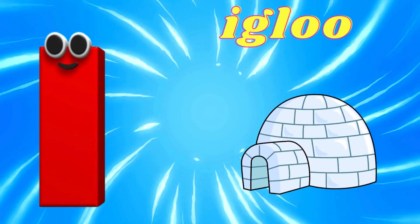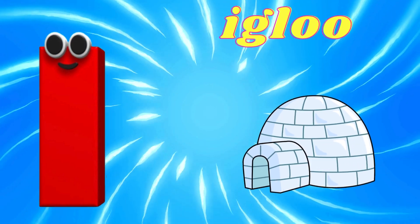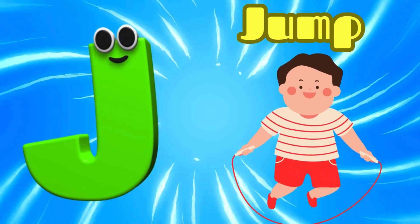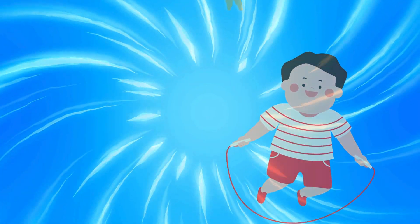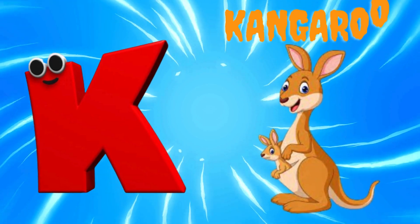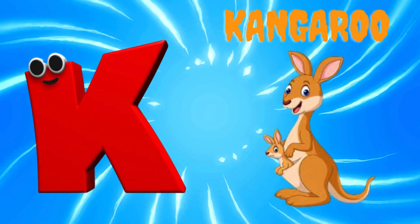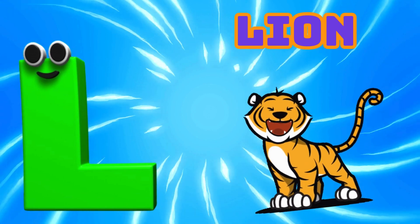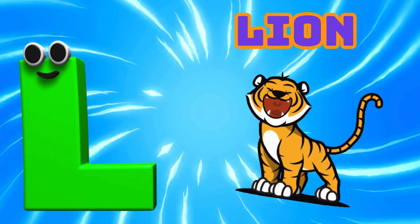I is for Igloo, I-I-Igloo. J is for Jump, J-J-Jump. K is for Kangaroo, K-K-Kangaroo. L is for Lion, L-L-Lion.